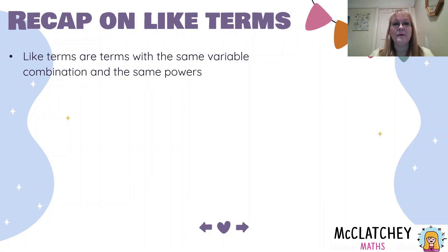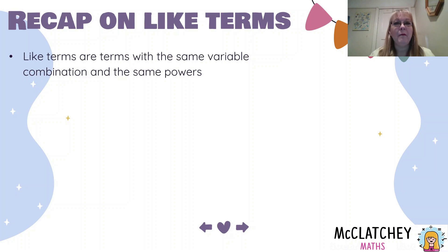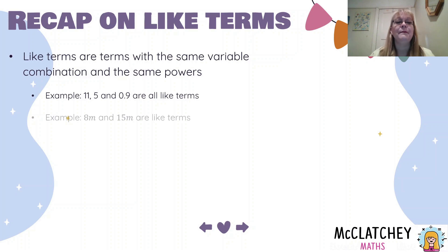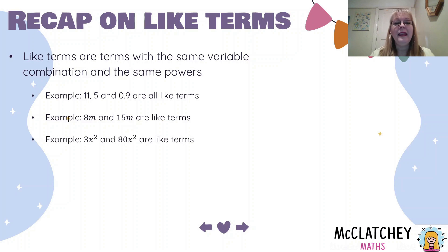Let's have that quick recap on what like terms are. Remember from our last video that like terms are terms with the same variable or letter combination and the same powers — those are the two really important parts. The number in front of the algebra component, what we call the coefficient, is not important. Only the letter combination and the power combination. For example, 8m and 15m are like terms because the m is the same — the 8 and the 15 are irrelevant. And 3x squared and 80x squared are like terms because the power is the same and the letter variable is the same.